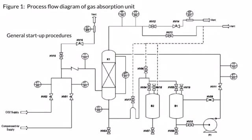General Startup Procedures: First, ensure all valves are initially closed except the ventilation valve labelled HV13, which should be fully opened. Second, drain any stagnant liquid above the sampling valve labelled HV03. Third, open the valve on the compressed air and carbon dioxide supply line; set the pressure of the compressed air supply to 0.2 MPa and the pressure of carbon dioxide supply to 2 MPa. Then turn on the main switch at the control panel.